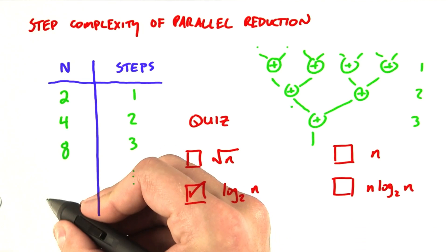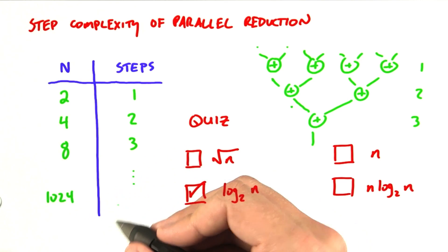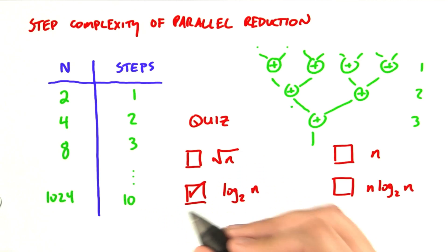So if we reduced 1,024 elements, we would see that it would take 10 steps compared to 1,023 in the serial case. This is two orders of magnitude fewer steps, and now you're starting to get an idea of why a parallel implementation might get significant speedups.